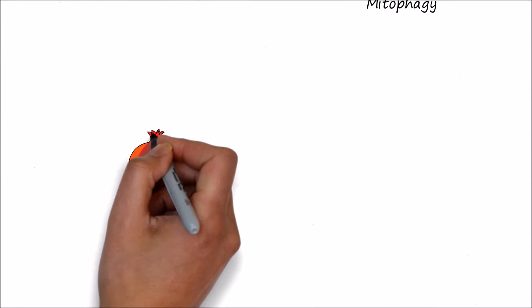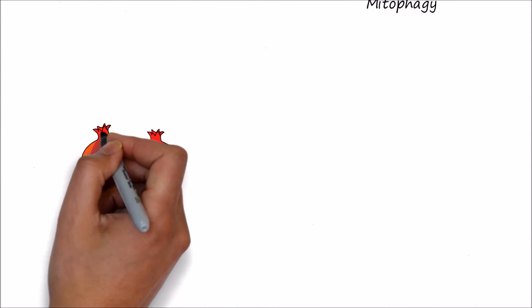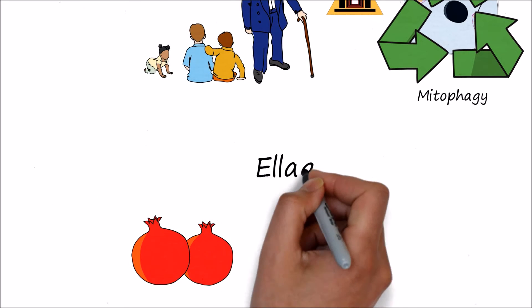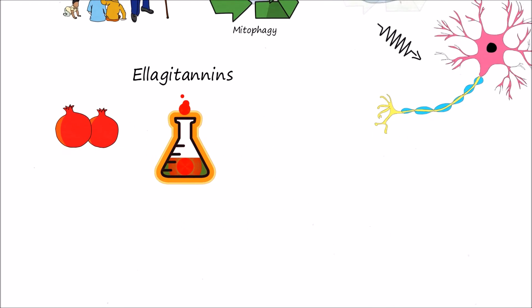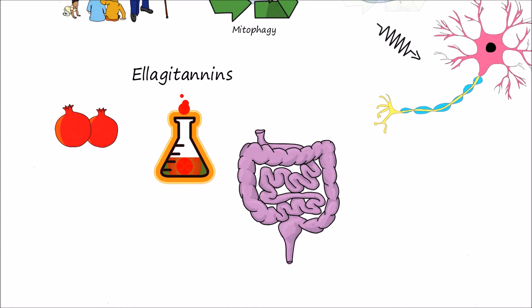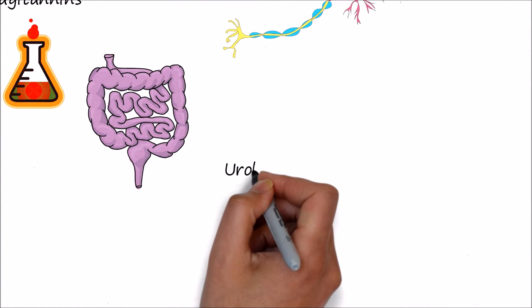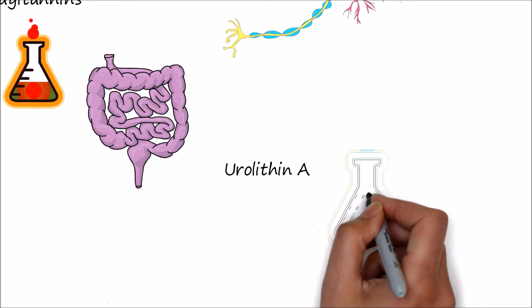Now, pomegranate contains a potent anti-aging compound called elagitanins. We didn't know its function until now. Once elagitanin reaches our gut, our gut bacteria will break it down to another compound called urolithin A.